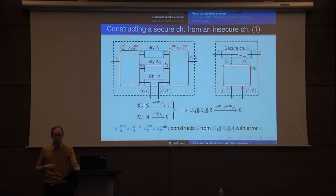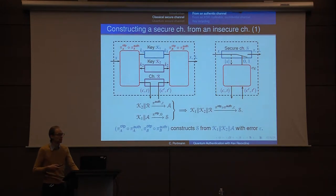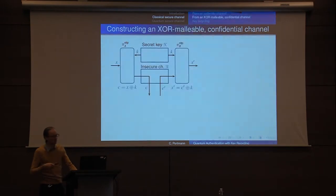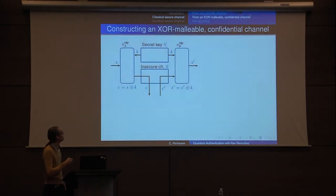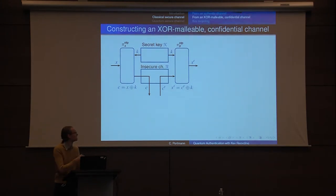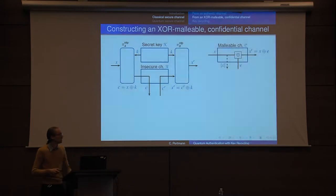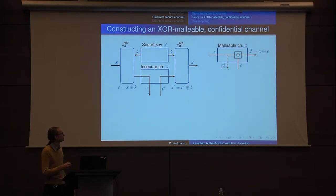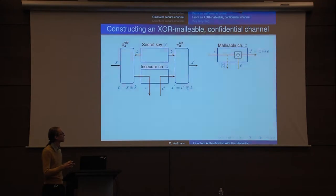This isn't actually much help for us because we use an authentic channel in the middle, which we can't do in a quantum way. So now I'm going to reverse the order of the one-time pad and the authentication. Now let's start with the one-time pad: we have an insecure channel, a message comes in, we one-time pad it, send it on the insecure channel, Eve can change it, and Bob does the one-time pad. What we construct is a channel where Eve gets no information about the message except the size, but Eve can change it — and she can only change it by doing bit flips.